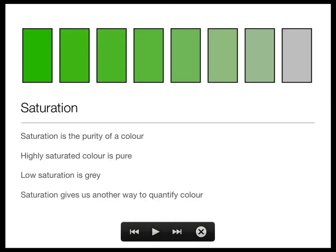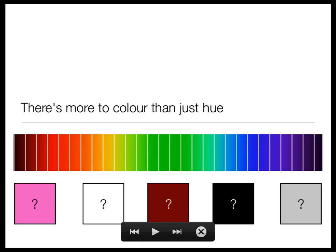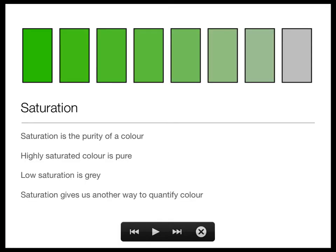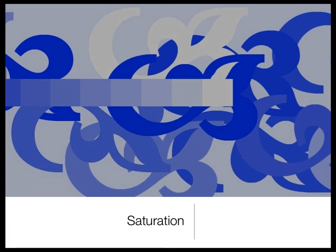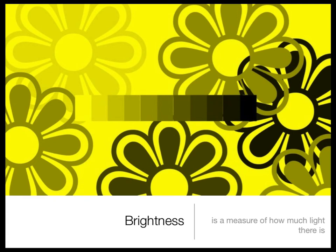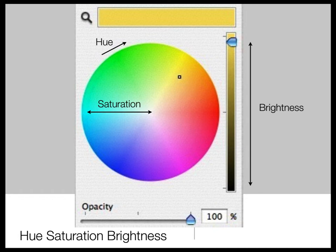The hue is where a color sits on the range from red, orange, yellow, green, blue, indigo through violet — its position on the rainbow scale. Saturation is a measure of the purity of the color: on one end is a highly saturated color, turn saturation all the way down and you get gray. Brightness is like a dimmer switch — turned all the way down it's black, and as you increase it you get the color.